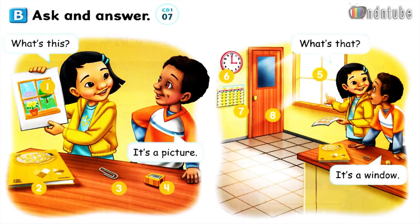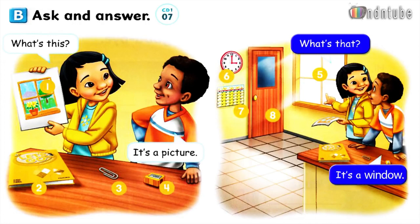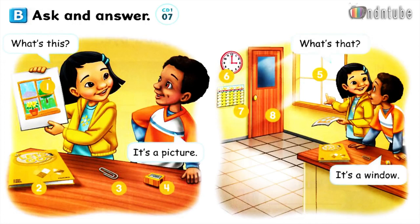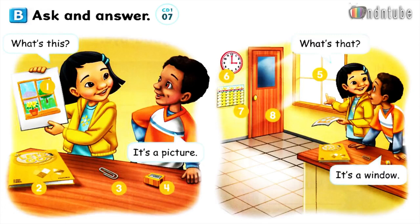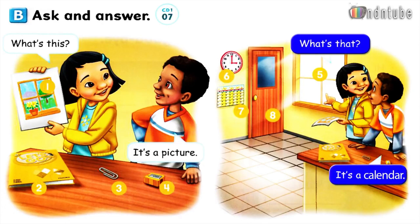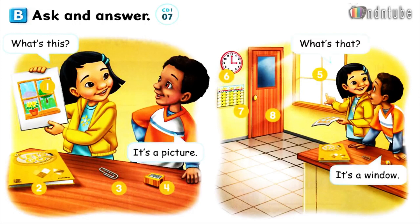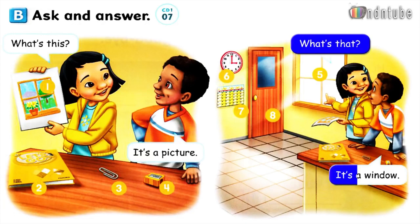Number 5. What's that? It's a window. Number 6. What's that? It's a clock. Number 7. What's that? It's a calendar. Number 8. What's that? It's a door.